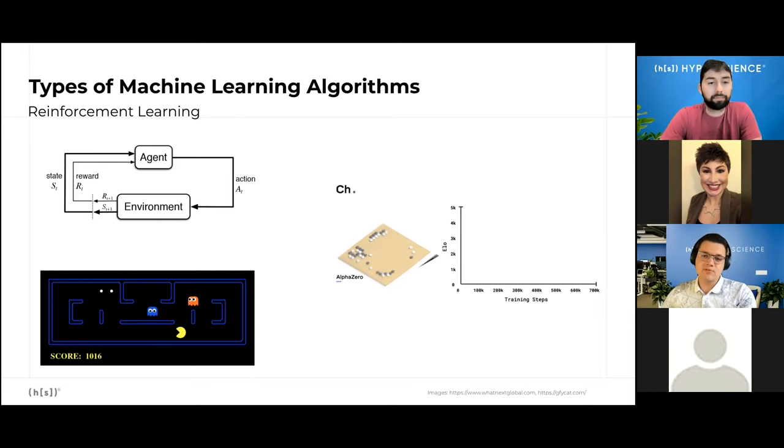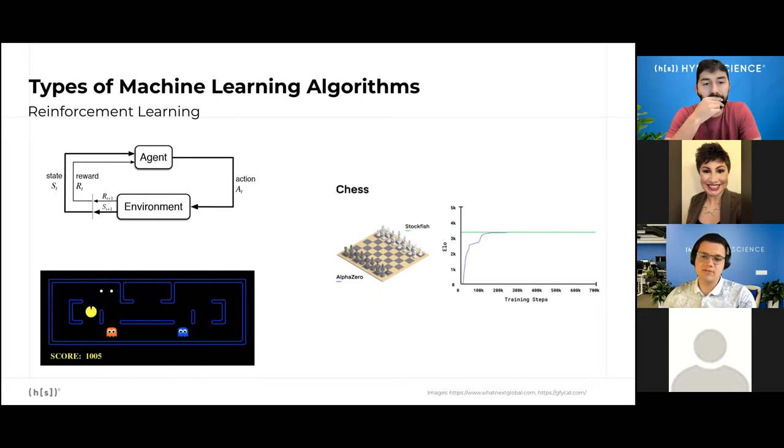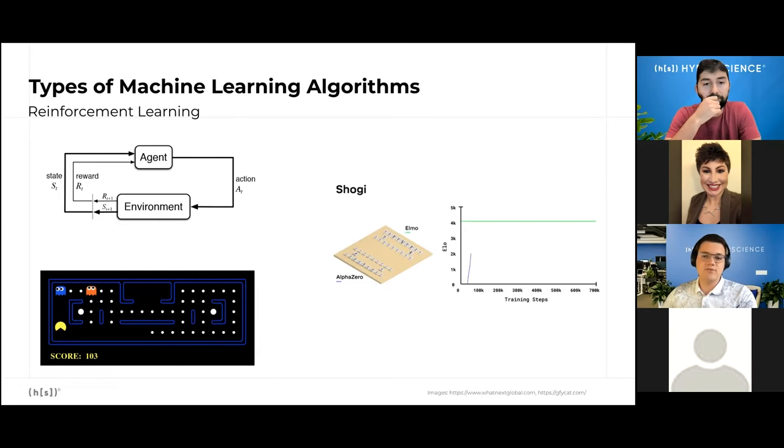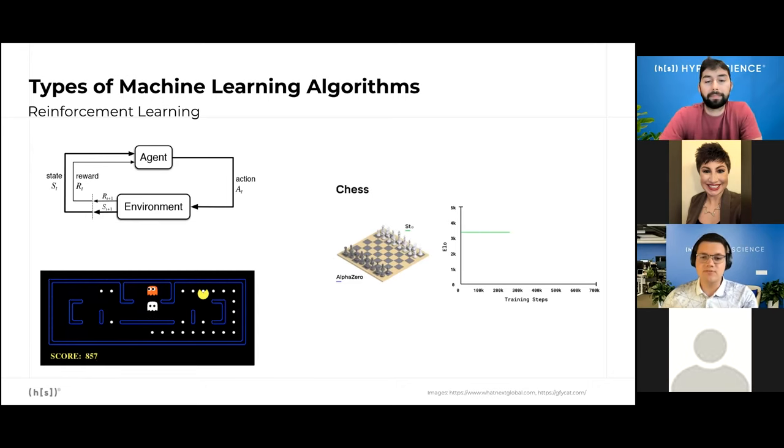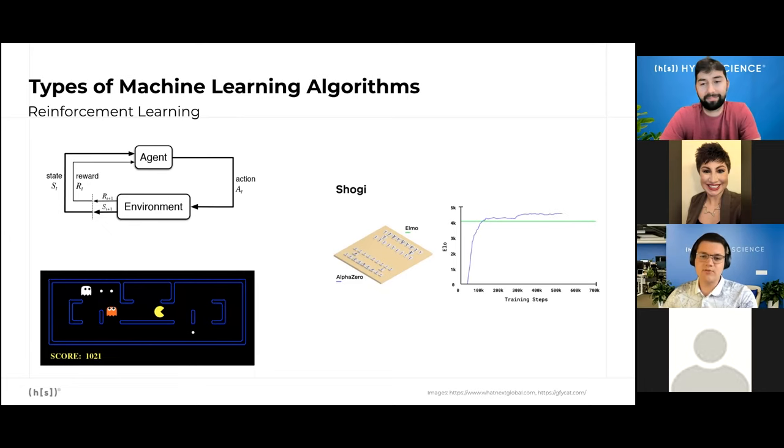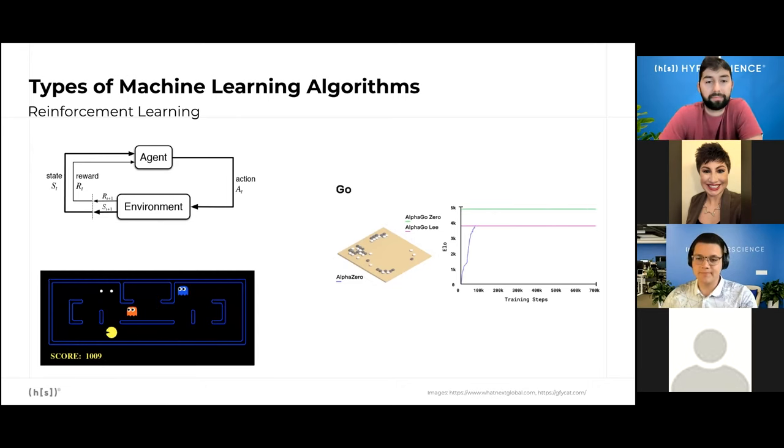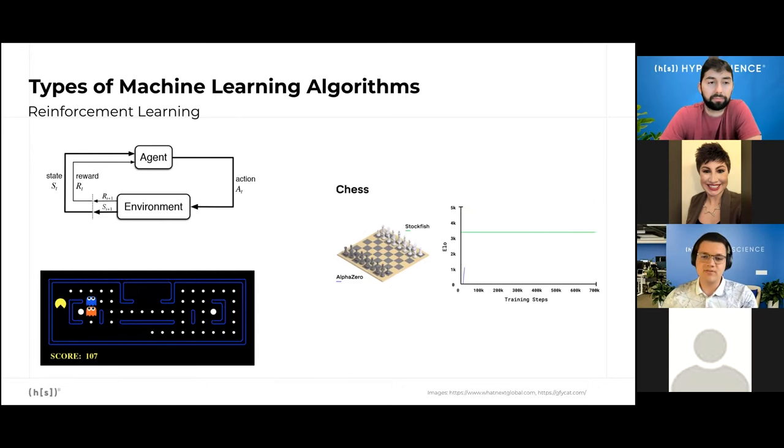A well-known reinforcement learning model is AlphaGo, which defeated one of the best Go players five years ago. This model was actually first trained with human data and then perfected by playing with itself. But later, DeepMind, which is the creator of AlphaGo, created AlphaGo Zero, which defeated AlphaGo and was trained all by itself. AlphaGo Zero is not only the best machine learning model in Go but also in chess and shogi. There is even a movie about AlphaGo and I recommend watching it if you haven't.